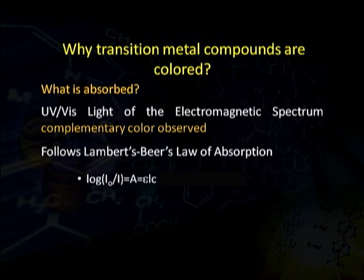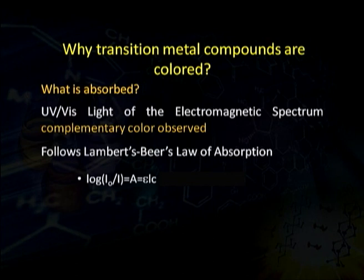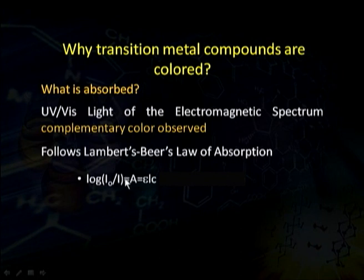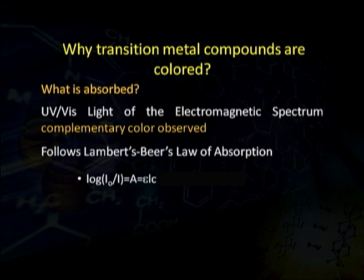The absorption of light follows Lambert's and Beer's law: log(I₀/I) = A = εLC. Here I₀ is the intensity that falls upon the material, I is the intensity that passes out from the material, and log(I₀/I) gives A, which is absorbance. Epsilon is the absorption coefficient, L is the length of the tube in which the compound is taken, and C is the concentration of the compound being measured.